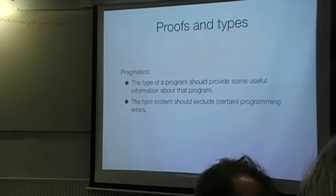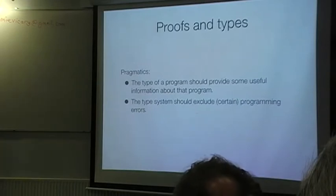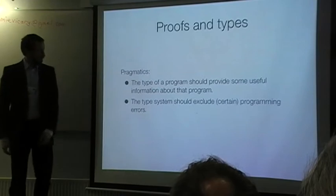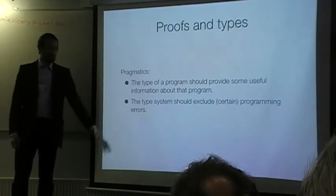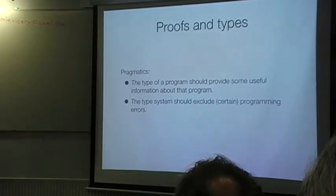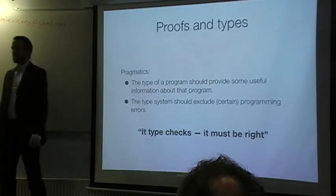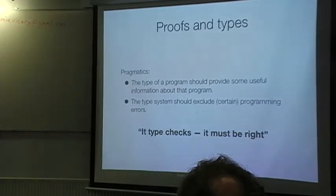From a more pragmatic point of view, if you have types, you want some useful information about the program coming through the type system. And in particular, you would like to avoid at least some programming errors. When we were working on quantum computing in the beginning days, this was a commonly said slogan. Unfortunately, the ML type system is not quite strong enough to guarantee any mistakes in the program. But we would like something like this to be true.